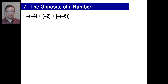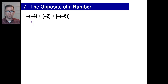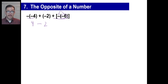Go ahead and pause it if you need to. Just take your time and be very accurate and careful about the number of opposites. The opposite of negative four is just positive four. And if you add a negative two, that's the same thing as saying minus two. And if you add the opposite of the opposite of six — well, the opposite of six is negative six, and the opposite of that is plus six. Adding a plus six, there you go.